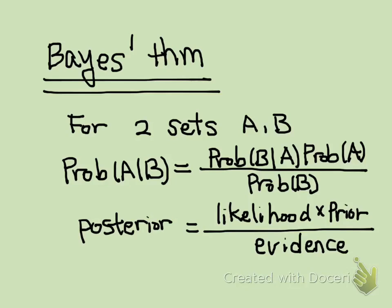Bayes' theorem is named after Thomas Bayes, an English statistician. Bayes' theorem provides a relationship between probability of A, probability of B, conditional probability A given B, and conditional probability B given A. Conditional probability A given B is also known as posterior probability, because it's the probability of A after taking into account information about B. Probability B given A is likelihood, probability of B is evidence, and probability of A is also known as prior probability, in the sense that it does not consider any information about B.